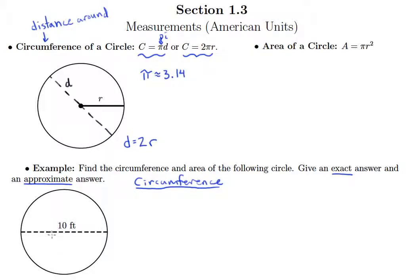But notice they give us the diameter of this circle, so I think it makes the most sense to use that first formula of circumference equals pi times the diameter.